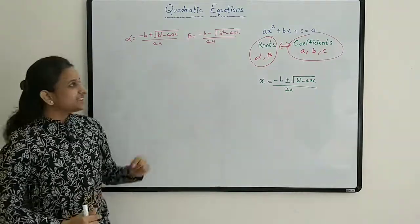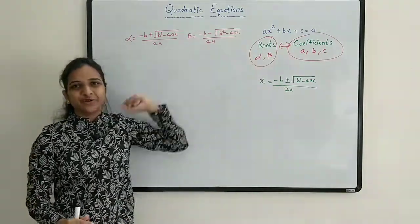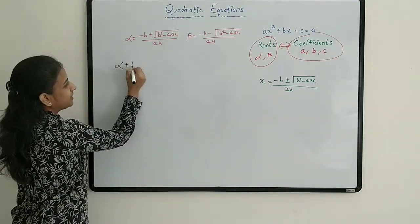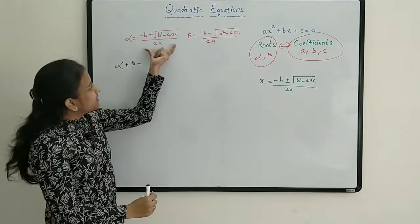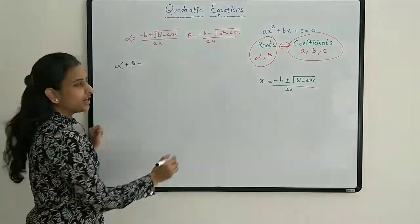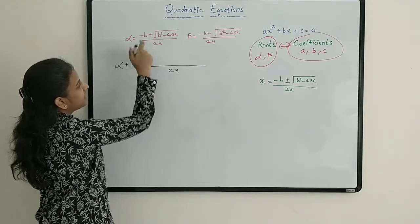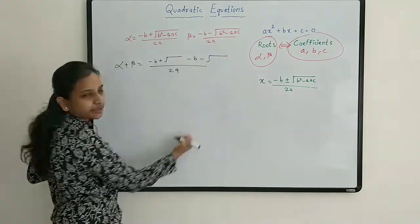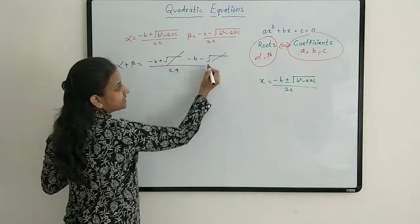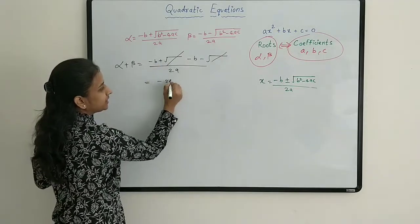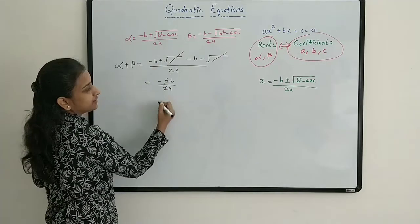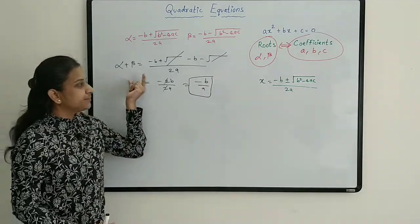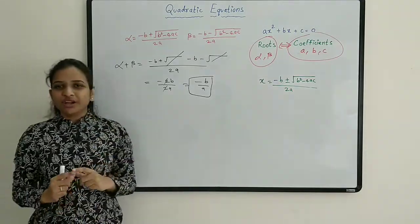Now let's build the relation between alpha, beta and coefficients a, b, c. Let's see what we get if we add the two roots. Alpha plus beta: 2a is the common denominator, and in the numerator (-b + √term) + (-b - √term), the square root terms cancel, leaving -2b / 2a. So alpha plus beta equals -b/a.